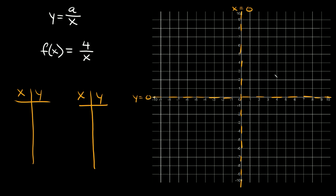We're going to take some points to the right of the vertical asymptote and plug those into our other table. For the left side, let's plug in x values of negative 8, negative 4, and negative 1. If we plug in negative 8, we get 4 over negative 8, which is negative one half. Plugging in negative 4 gives 4 over negative 4, which equals negative 1. And plugging in negative 1 gives 4 over negative 1, which equals negative 4.